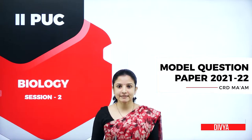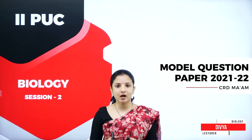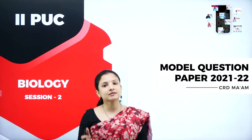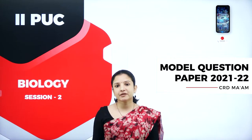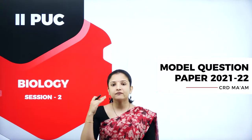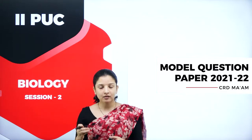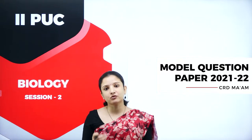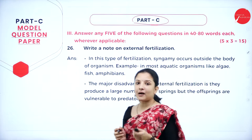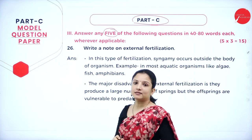Hello everyone, a warm welcome to the second session of the model question paper discussion. In this session, we shall discuss about Part C and Part D, wherein Part D consists of two sections carrying five marks, that is Section 1 and Section 2. In the previous session, we had discussed about the model question paper in detail and went through how to write the answers for Part A carrying one mark and Part B carrying two marks. So to start directly with Part C, we have 10 questions given out of which you need to answer only 5.